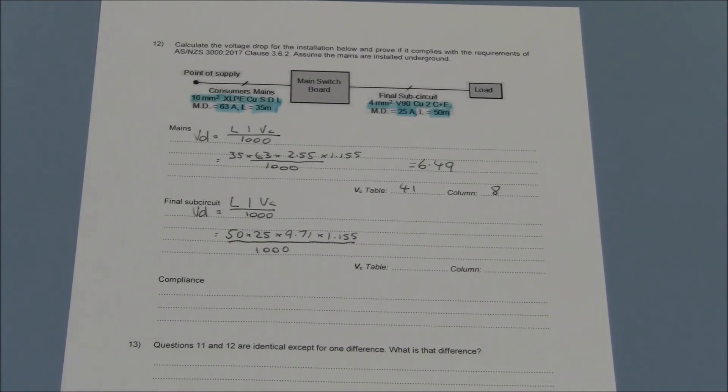Populating our equation as such, we can calculate the value of voltage drop of the final sub circuit to be just shy of 14 volts.